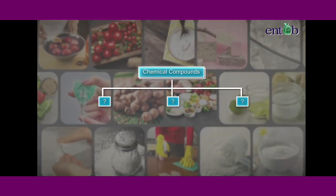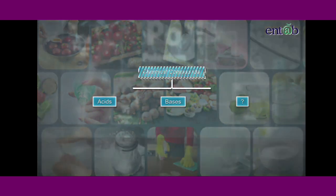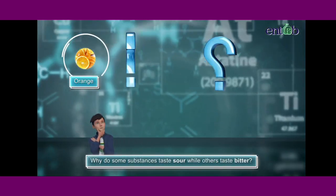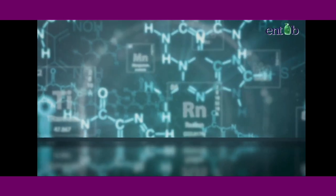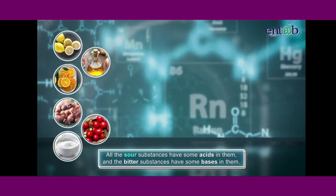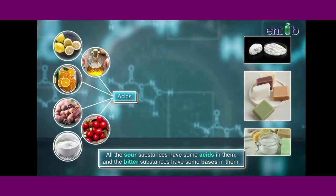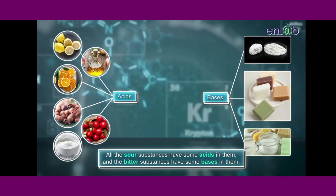So, these two different kinds of substances can be classified as acids and bases. Why do you think some substances taste sour while the other taste bitter? All these substances have some acids in them and the bitter substances have some bases in them.